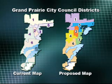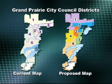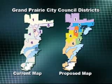According to the 2010 census, the population in some districts has increased, creating an imbalance. The proposed Map A is drawn to compensate for the changes without diluting minority representation or displacing current council members.